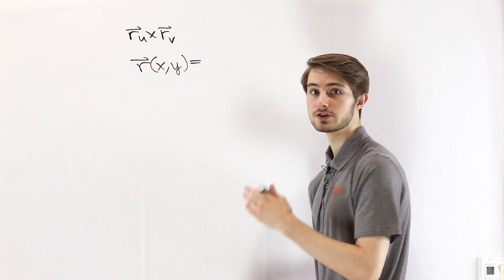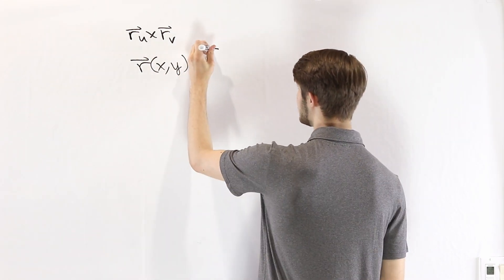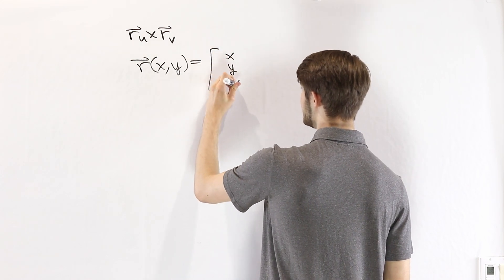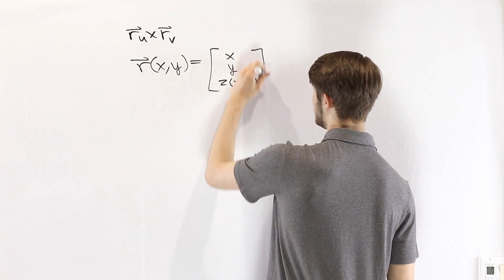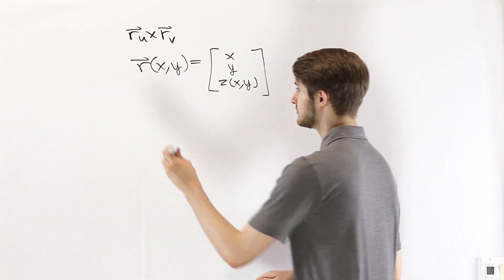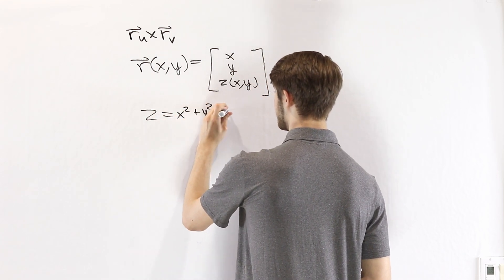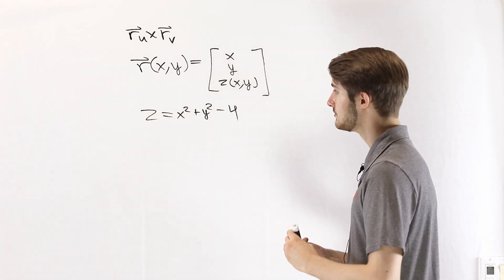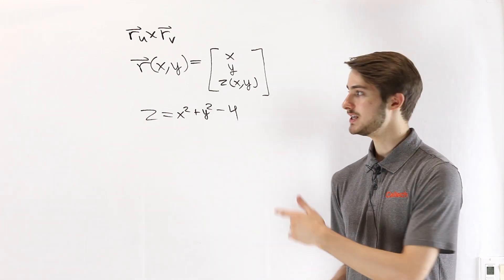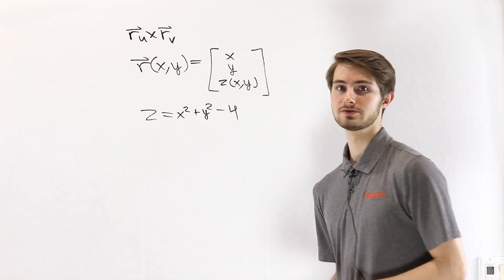For the first case, let's say we have some vector-valued function r of x and y, given by x, y, and some function z of x and y. This is what we get if our surface is described by some function — for example, z equals x squared plus y squared minus 4 — where z is given in terms of x and y. In that case, we can easily parametrize it using the variables x and y and plug in the formula for z.